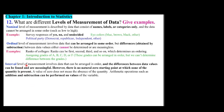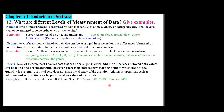Interval level of measurement involves data that can be arranged in order and differences between values are meaningful. However, there is no natural zero starting point — a value of zero does not mean the absence of the quantity. Arithmetic operations such as addition and subtraction can be performed. Examples include body temperature (98.2°F, 98.6°F) and years (1000, 2000).